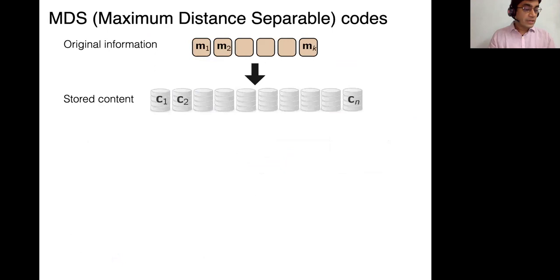In fact, a very classic solution for this is something called a maximum distance separable code. It's basically an optimal form of erasure coding. So here you can imagine your data is, let's say, k symbols long, the message m1 through mk, and you encode it into a coded form, c1 through cn, and n is going to be typically bigger than k.